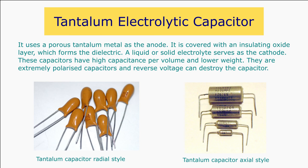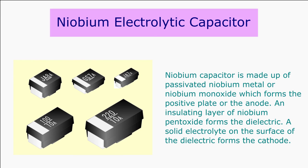Tantalum electrolytic capacitors use tantalum as the anode, a thin insulating oxide layer as the dielectric, and the electrolyte as the cathode. Tantalum capacitors have higher capacitance per unit volume and lower weight. In niobium electrolytic capacitors, the anode is made up of passivated niobium metal or niobium monoxide. An insulating layer of niobium pentoxide is added onto the anode as the dielectric, and a solid electrolyte on the surface of the oxide layer acts as the cathode. These capacitors are available as surface mount devices.